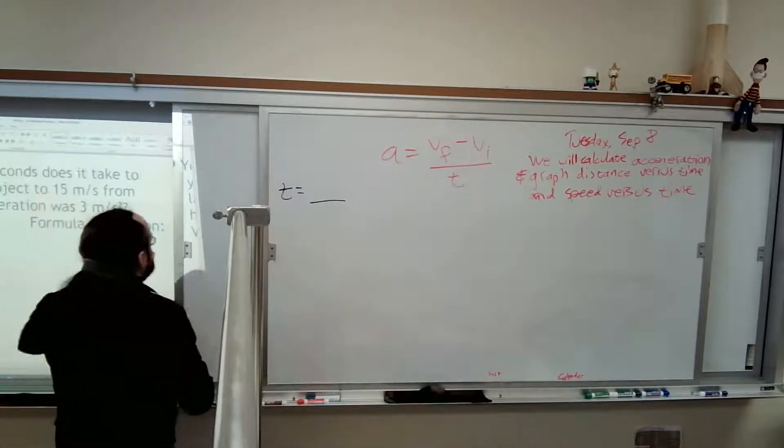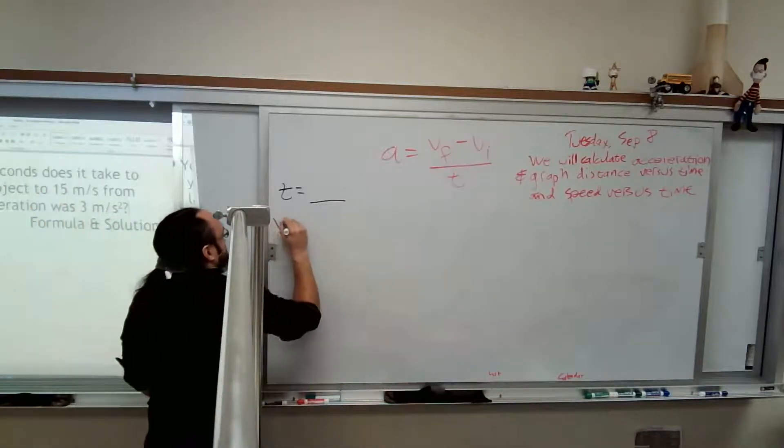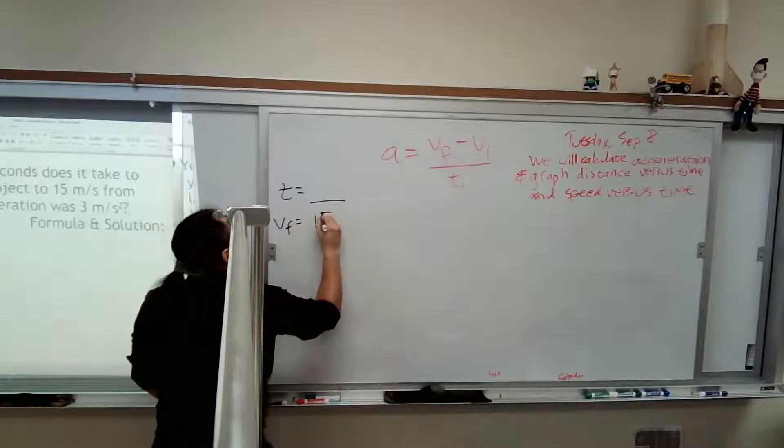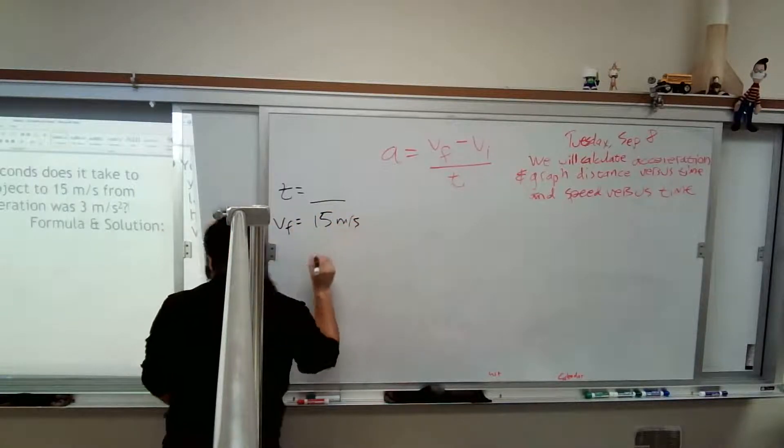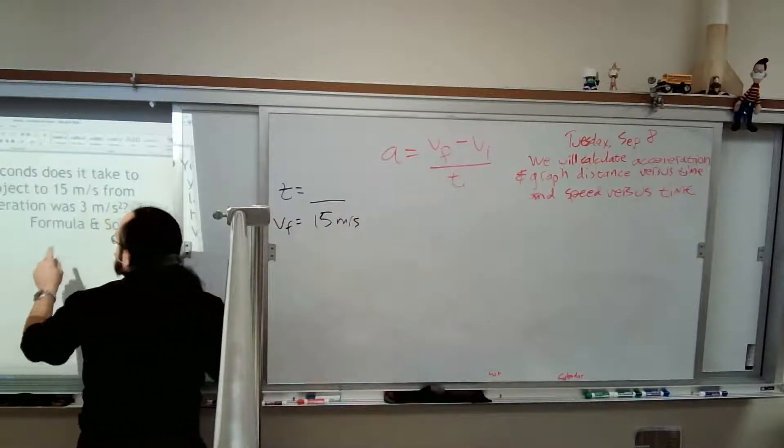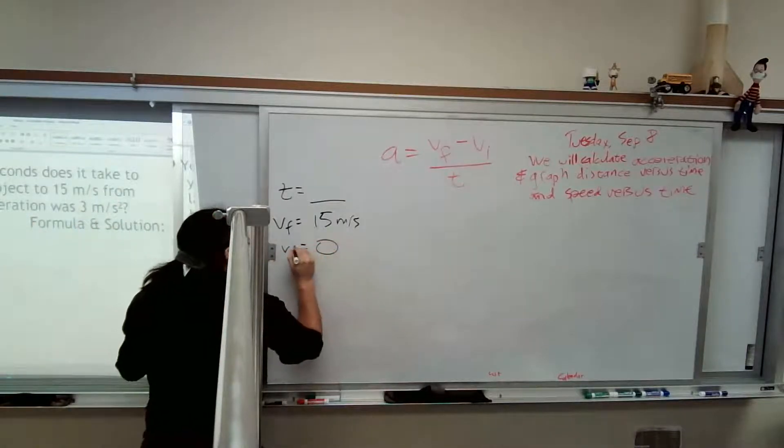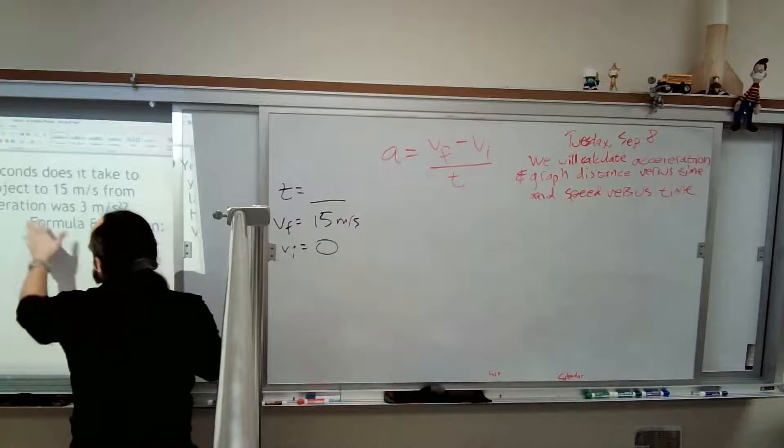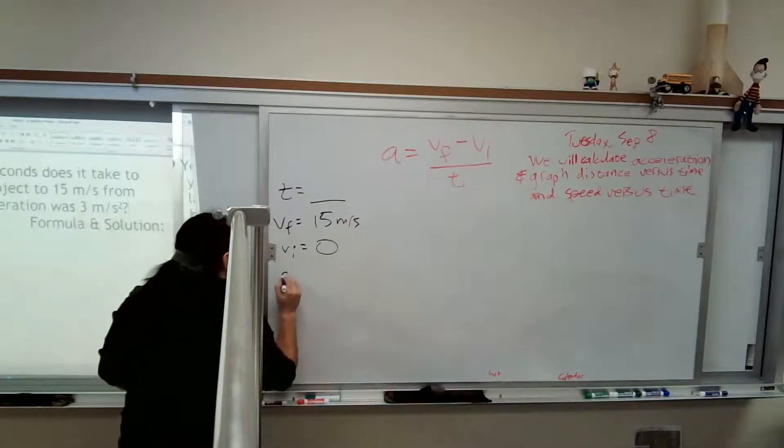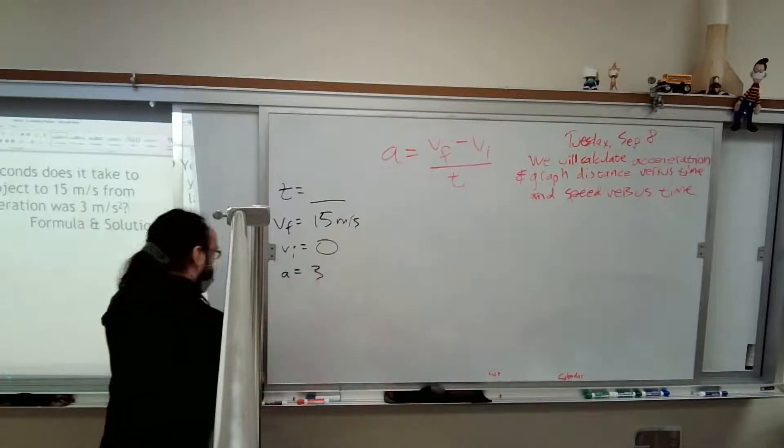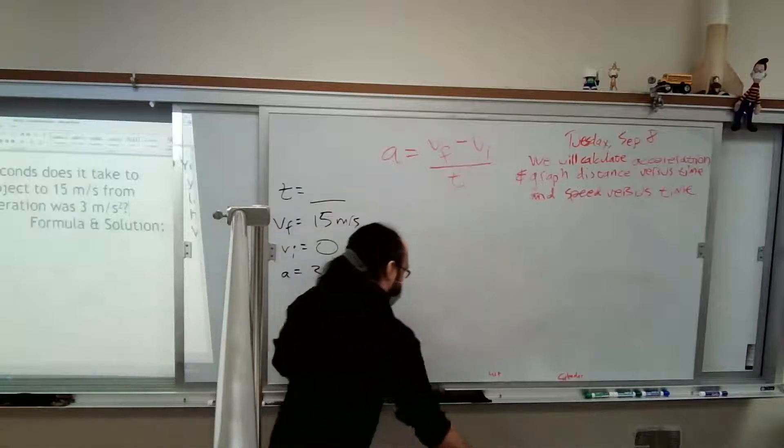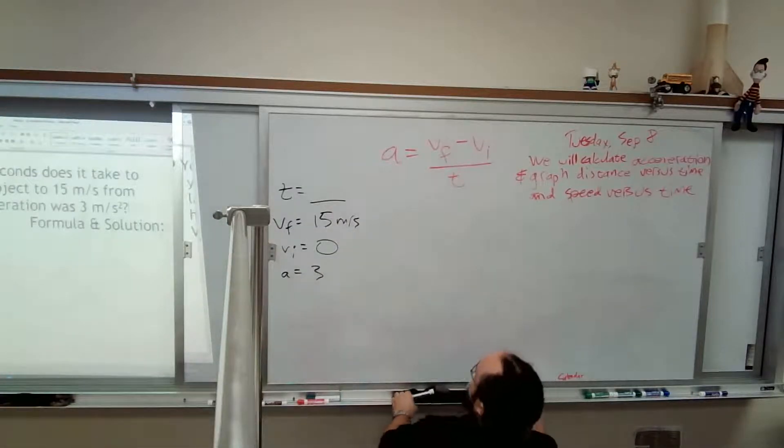So let's write those down. It goes to 15 meters per second. That's the final velocity. And it goes from rest. That's initial velocity. If the acceleration was three, so acceleration was three. Because I'm so tall, I'm going to sit down here.